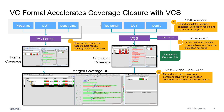Furthermore, VC Formal FPV and VC Formal CC also produce coverage metrics, which can be combined with simulation coverage to reduce the amount of coverage closure tasks needed by simulation. All of these touch points add significant value for VCIS customers by using VC Formal FCA.